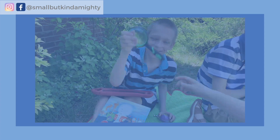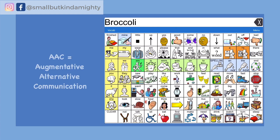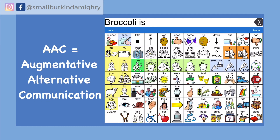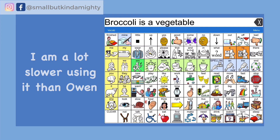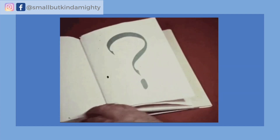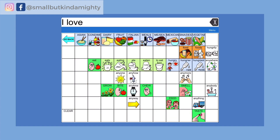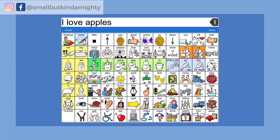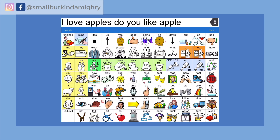When adults use Owen's AAC with him, they are modeling for him how to put words together in sentences. For example, making comments like 'broccoli is a vegetable,' or modeling how to ask and answer questions like 'I love apples — do you like apples?'